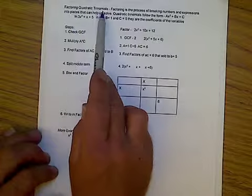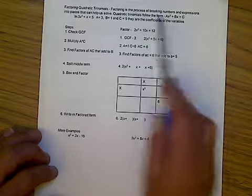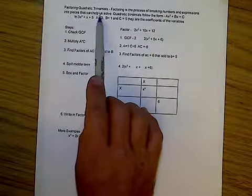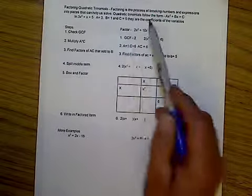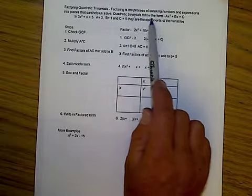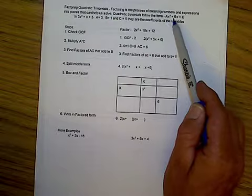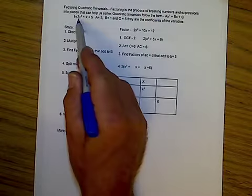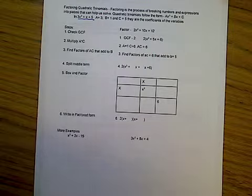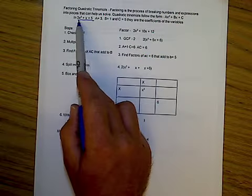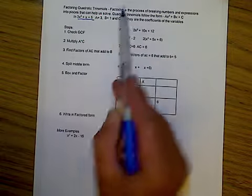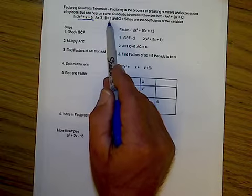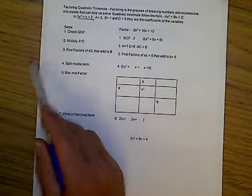But let's start with this method. So, factoring quadratic trinomials. Factoring is the process of breaking numbers and expressions into pieces that can help us solve or understand them better. Quadratic trinomials follow the form ax² + bx + c. So, if you look at the top of your sheet there, there's the quadratic trinomial 3x² + x + 5. And in this case, a is 3, b is 1, and c is 5.